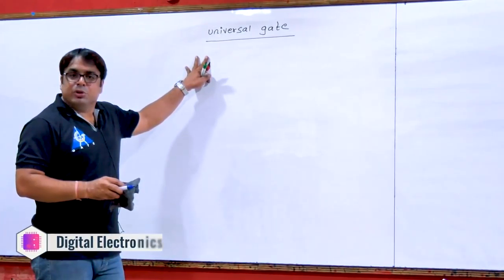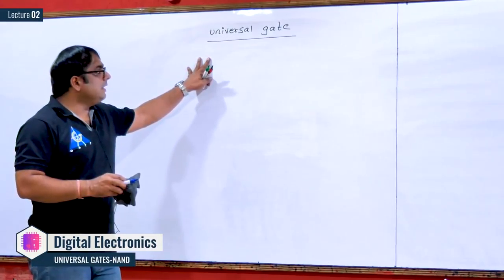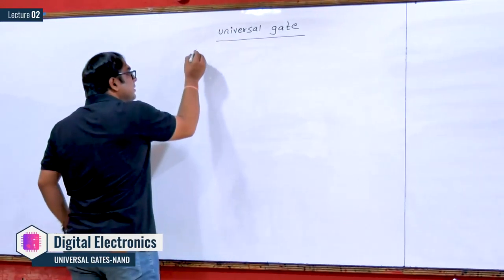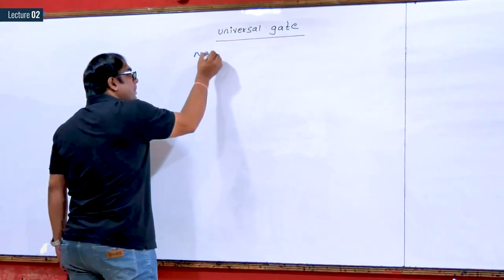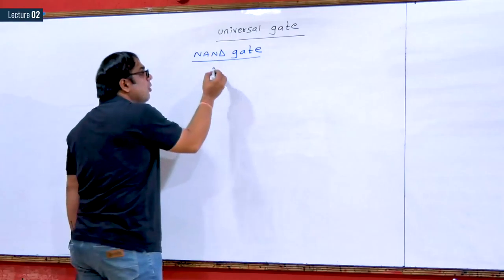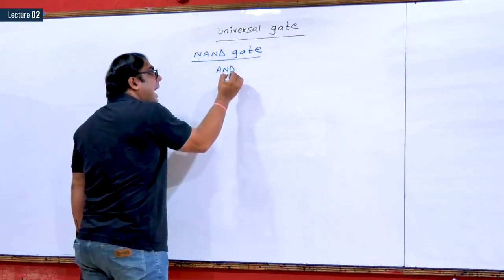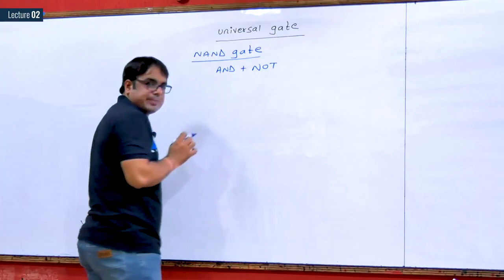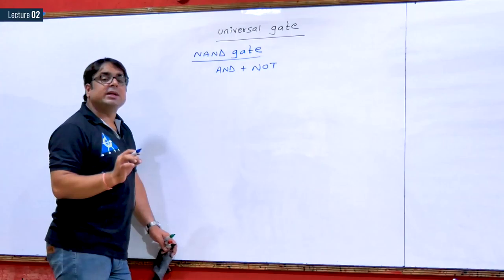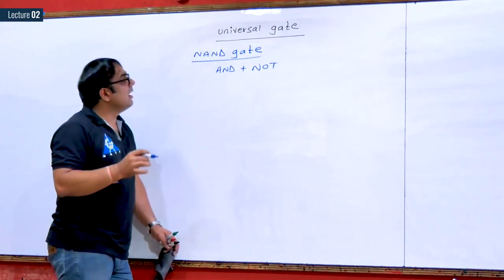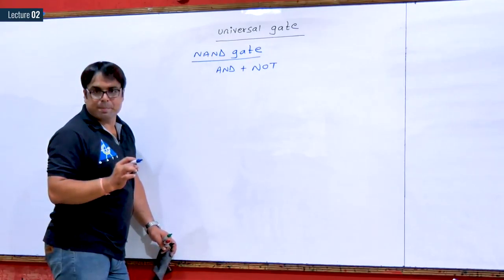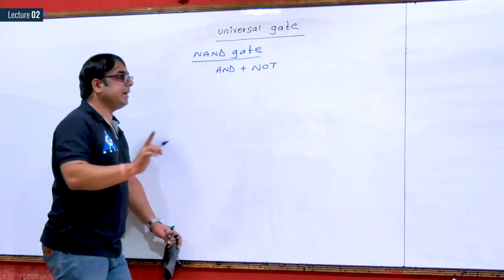Next, we will discuss universal gates. In universal gates, we have to discuss NAND gate and NOR gate. I will be starting with NAND gate. NAND gate is a combination of AND gate with NOT gate. In simple words, NAND gate is an AND gate followed by a NOT gate.